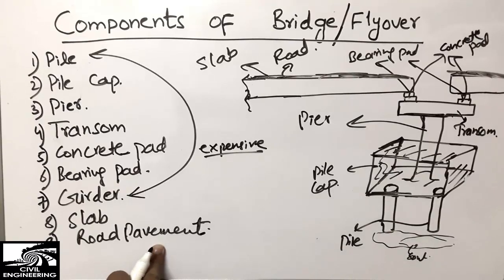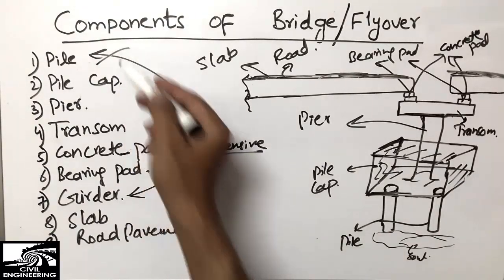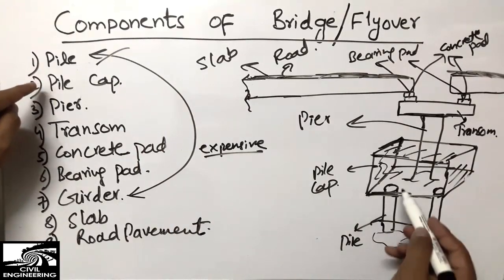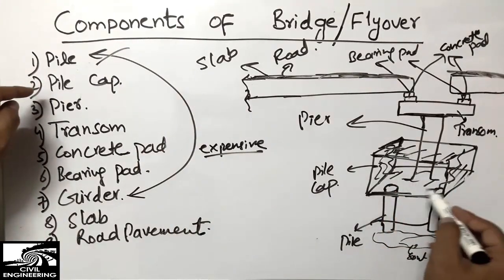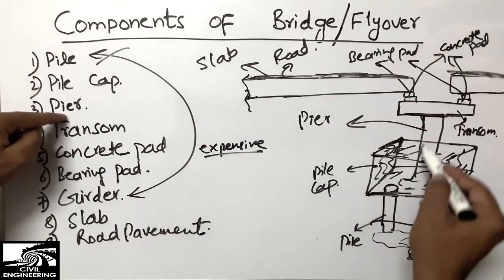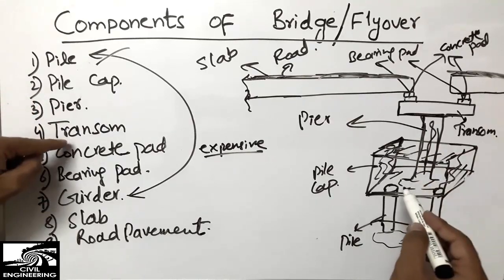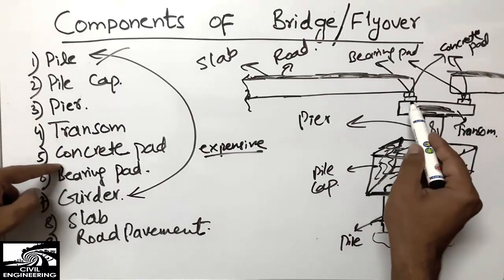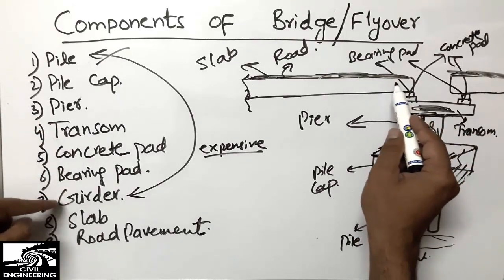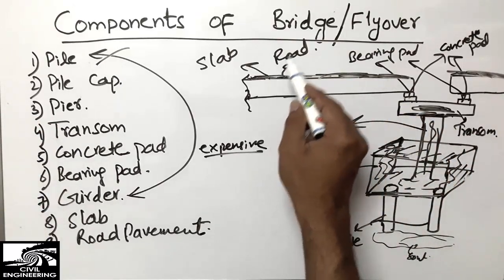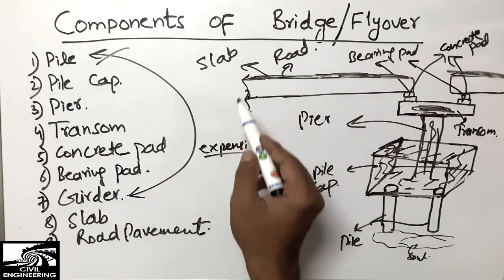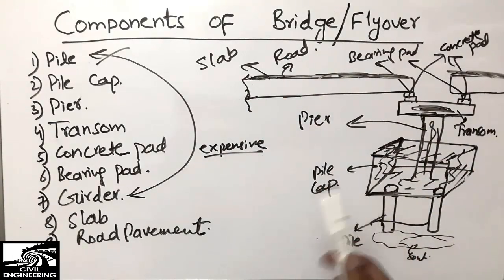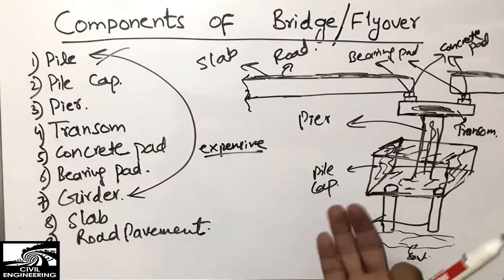To summarize: first is the pile, second is the pile cap — a concrete cap above the pile, third is the pier — a column-type element, fourth is the transom, then the concrete pad, then the bearing pad, then the girder, then the slab, and finally the road pavement. This is the whole scenario of how a bridge is constructed and what the main components involved are.